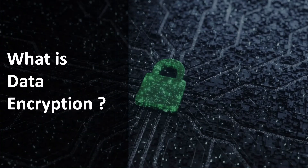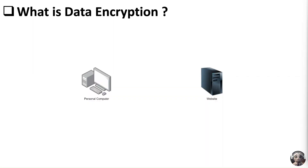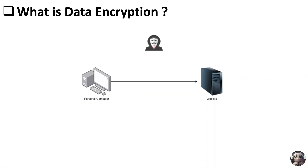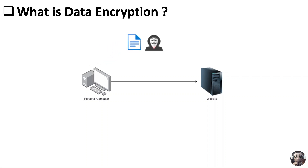What is data encryption? Let's imagine you are filling out an online form. Once you complete the form and hit submit, your information is sent from your computer to the website. Now, if a malicious hacker wants to steal your details, directly hacking into the website itself to get your information can be challenging. However, it might be easier for the hacker to intercept the data as it travels between your computer and the website, allowing them to see the information you've submitted.